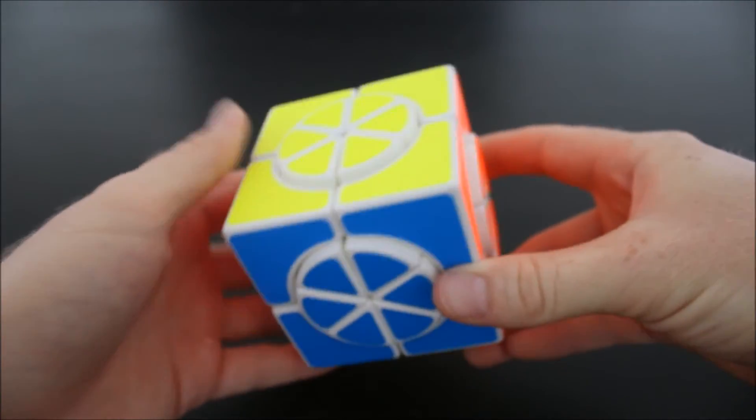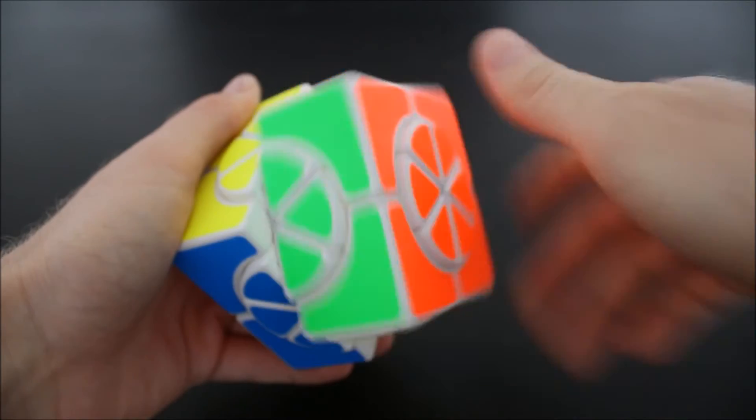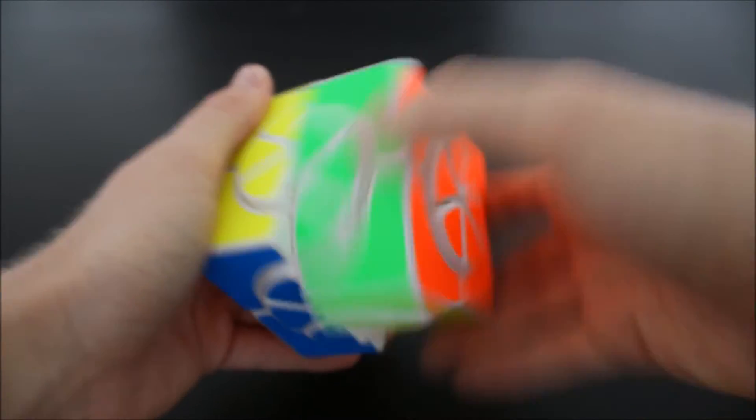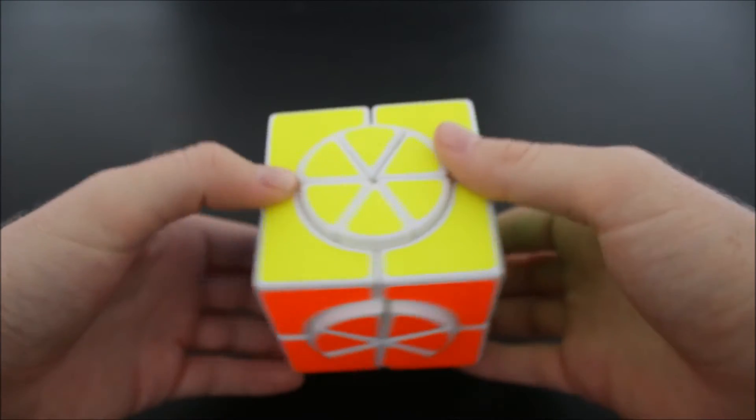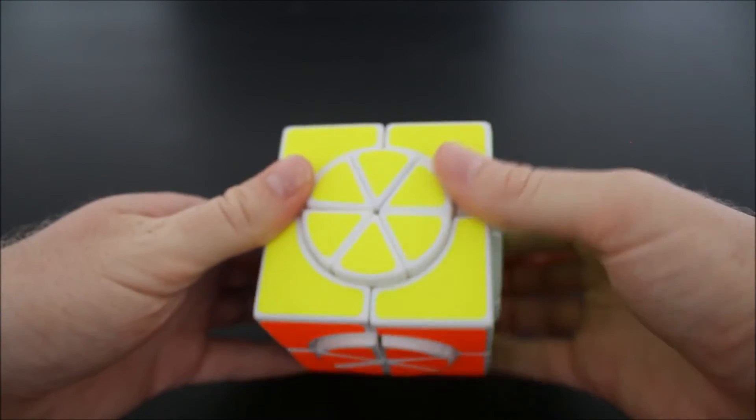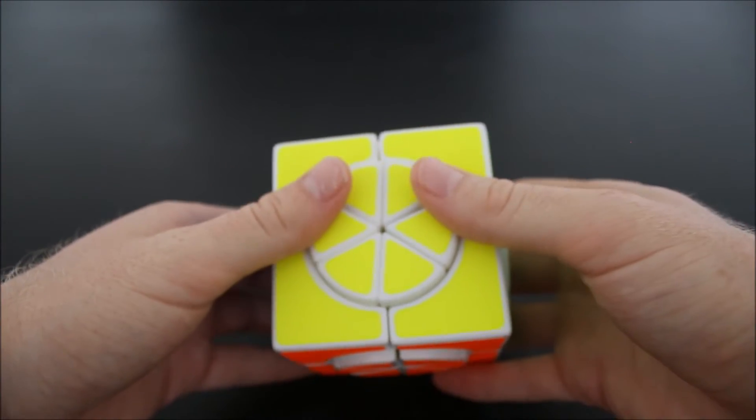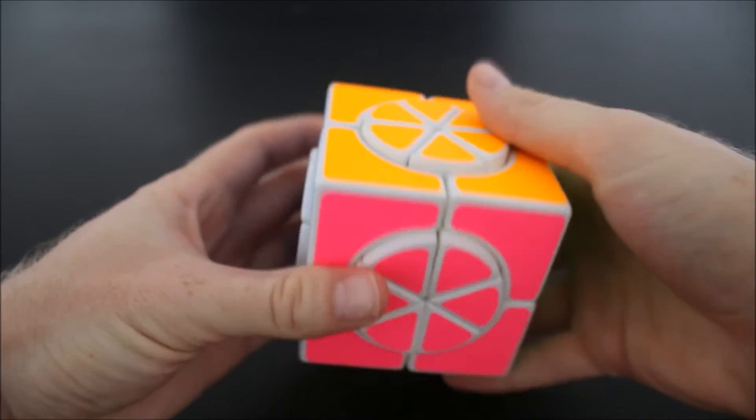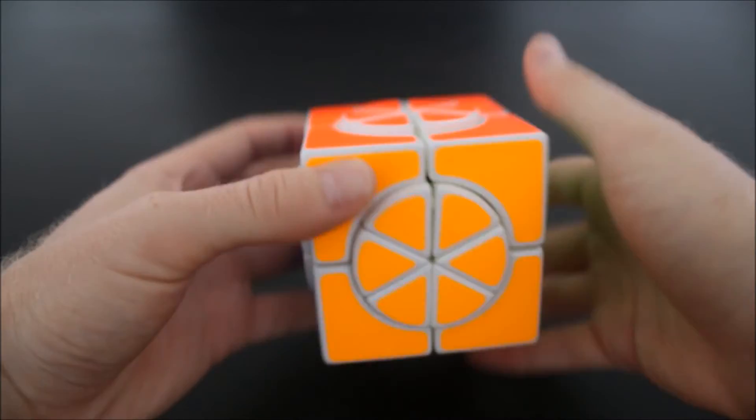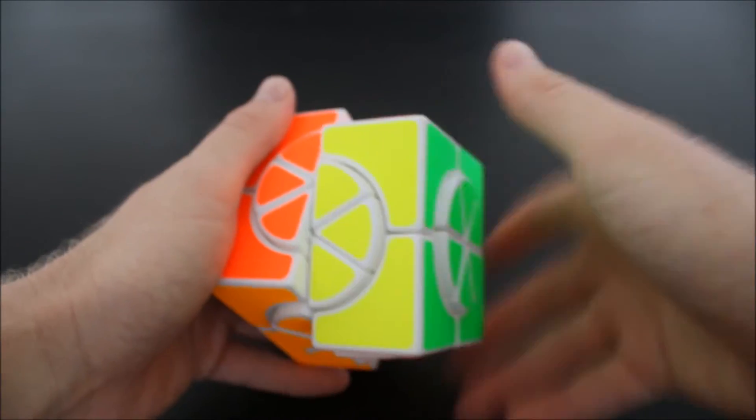But once you have these center slices lined up, it just glides smooth. But now we'll see if we turn it like this, there's no way it can cut through. So you have to align, and then it turns on through.